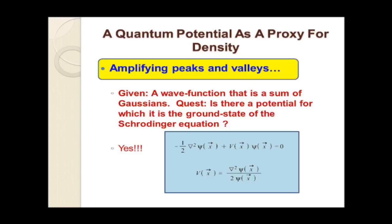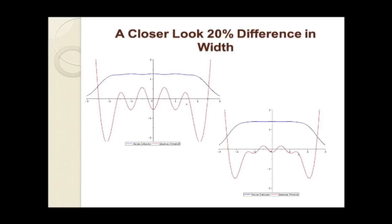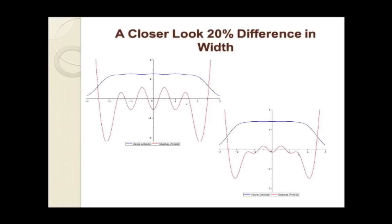We can solve that equation by setting the right-hand side to zero by adding a constant to V. We take the second derivative of the Gaussian sum function and divide by the function itself, giving us a potential function that provides a contrast-enhanced proxy for the density — think of it like Photoshop. You can see the potential function in red starting to show features where the Parzen function doesn't. Over a wide range of the parameter, the potential function is doing the job: it's contrast-enhancing. Question from audience: Taking derivatives enhances noise — don't you pay a signal-to-noise penalty? Answer: Not so that we see it, because we're working with the Gaussian functions.